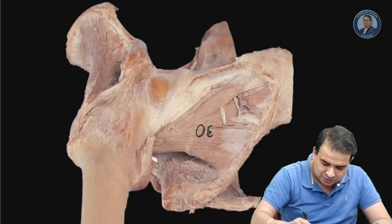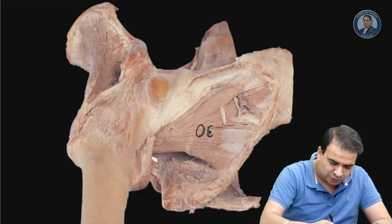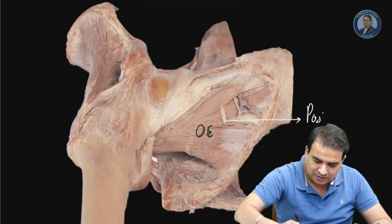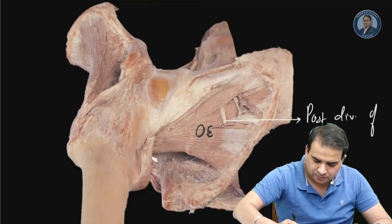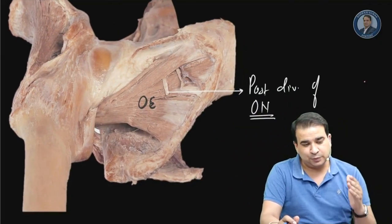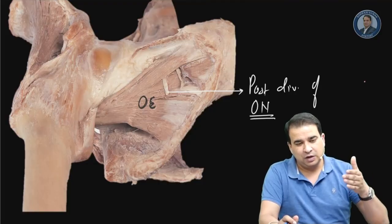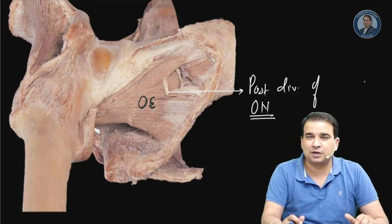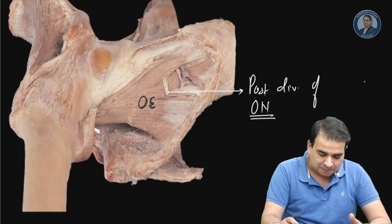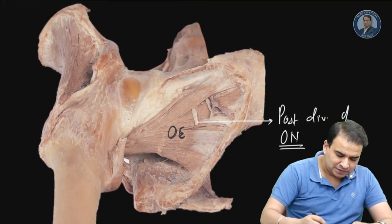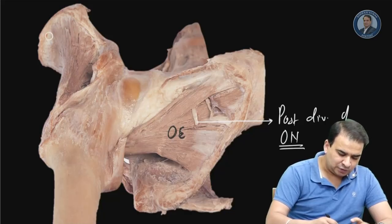You can see a nerve piercing the obturator externus, which is also supplying it. This is the posterior division of the obturator nerve. The obturator nerve comes out as anterior and posterior divisions, and it is the posterior division which pierces the obturator externus muscle and then goes into the medial aspect of the thigh, supplying the adductor magnus muscle as well.